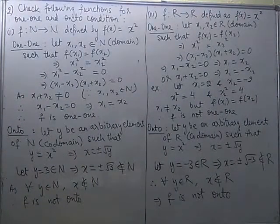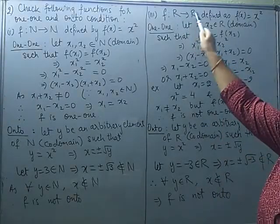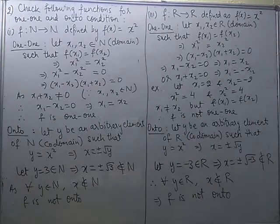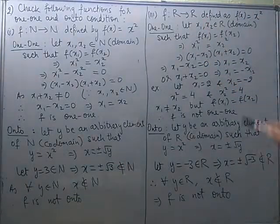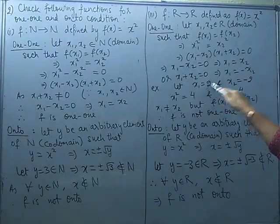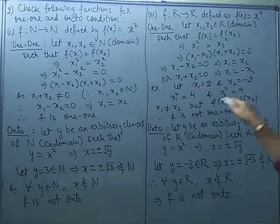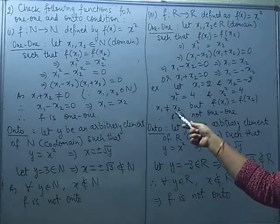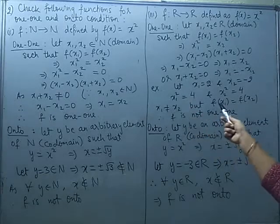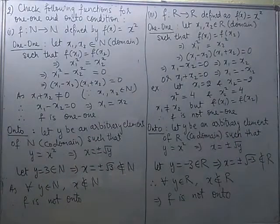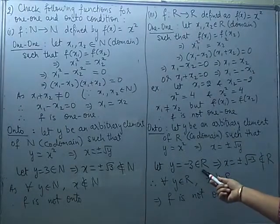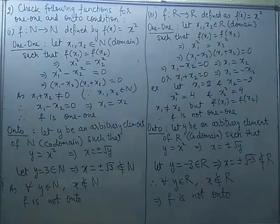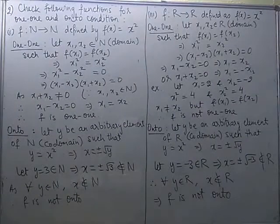The second part is of the same kind — the only difference is that the domain and codomain are replaced by ℤ, the set of integers. If domain and codomain are both integers with the same definition f(x) = x², the function is again not 1-1, since 2 and −2 are both integers with the same image. For onto, y = −3 is an integer but x = ±√(−3) is not an integer, so f is not onto when domain and codomain are replaced by ℤ.